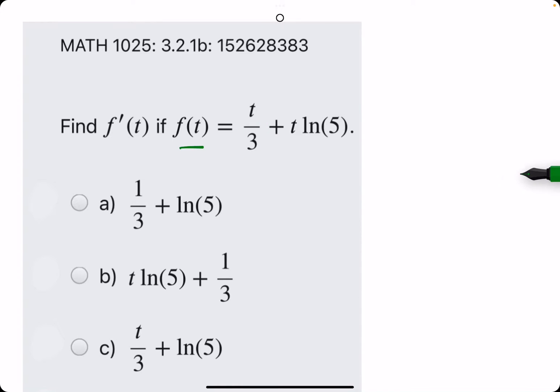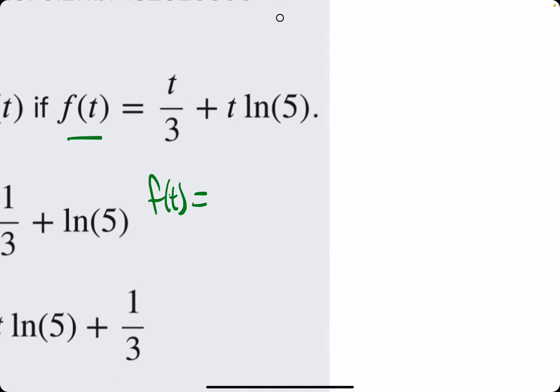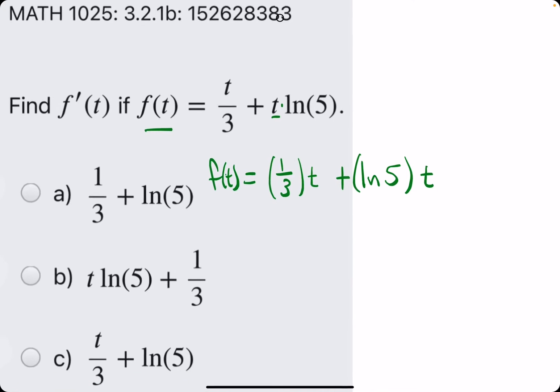t divided by 3. Let's think of another way we could rewrite this. So we're just rewriting the function, not finding a derivative yet. We could rewrite t divided by 3 as one-third t and then we'll just maybe rearrange this. Again, ln of 5 is just a number and then that's being multiplied by t in this function.